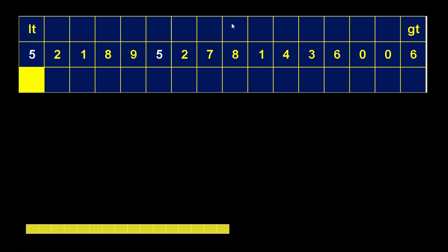The process of partitioning is going to divide this array up into three groups. The middle group will contain the pivot. We're using the very first number as our pivot, and we have that in white. And in fact, if you look across, there's another five, so the middle group is going to end up containing these two numbers. The left group will contain all the numbers less than five, and the right group will contain all the numbers greater than five.